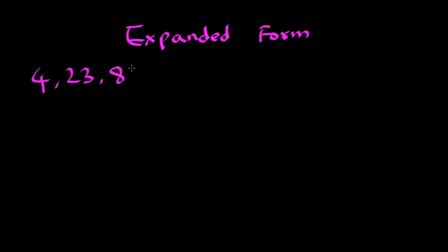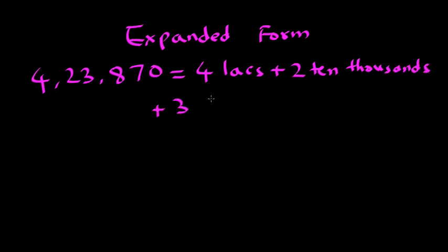Sometimes you will be asked a question to write an expanded form of a number, which is nothing but expanded version of the number in terms of place values. So expanded form for 4 lakhs 23,847 will be 4 lakhs plus 2, 10,000s plus 3,000s plus 8 hundreds plus 4 tens plus 7 ones.